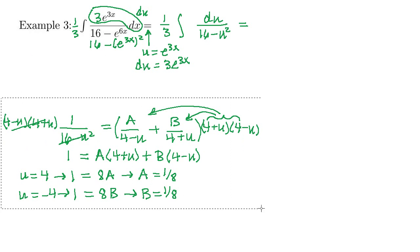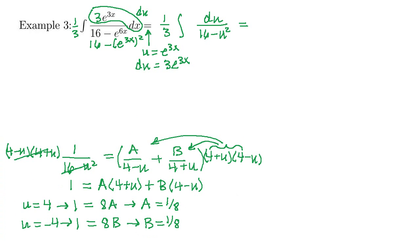Now we've got that 1 third out in front. And this will be now integral 1 eighth over 4 minus u, 1 eighth over 4 plus u, du. That common 1 eighth, we can factor that out in front with the 1 third. So this will now be 1 twenty-fourth. And then, we've got integral 1 over 4 minus u du, and then, plus integral 1 over 4 plus u du.